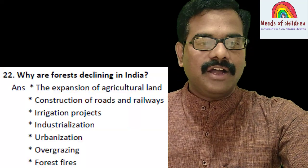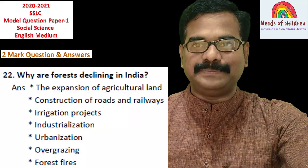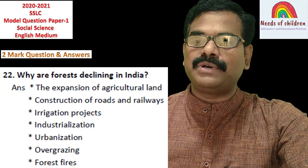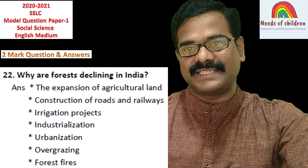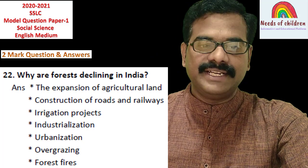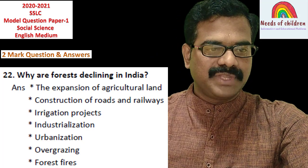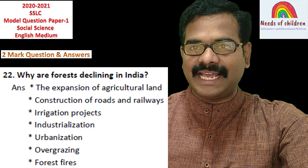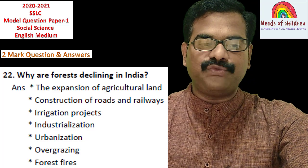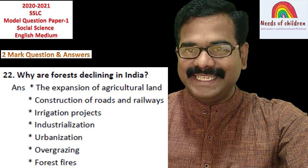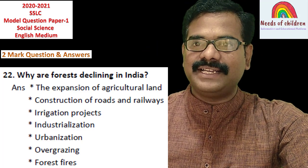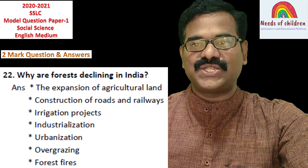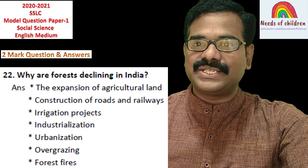Question number 22: Why are forests declining in India? This is from Geography, Chapter Number 5 — Indian Forest Resources. The answer: expansion of agricultural land, construction of roads and railways, irrigation projects, industrialization, urbanization, and forest fires.